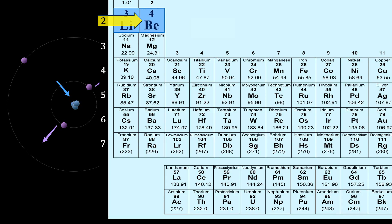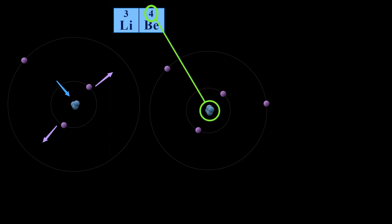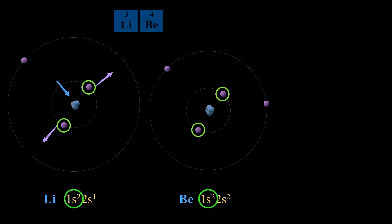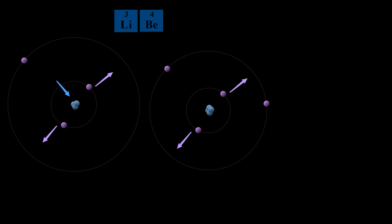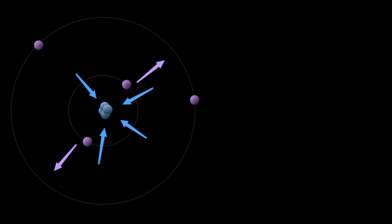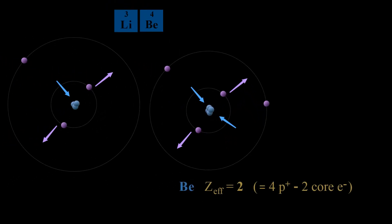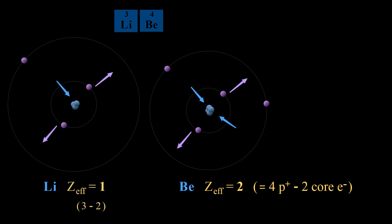Let's begin by looking at the next element in period 2: beryllium. Beryllium has a nuclear charge of 4+, one more than lithium. Both elements have 2 core electrons. Lithium has 1 valence electron, while beryllium has 2 valence electrons. The amount of shielding in beryllium remains the same as in lithium — 2 core electrons — but beryllium has 4 protons exerting an attractive force. The 2 shielding electrons cancel 2 attracting arrows, giving an effective nuclear charge, Zeff, of 2: 4 protons minus 2 core electrons, compared to a Zeff of 1 for lithium.